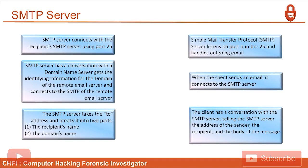The SMTP server connects with the recipient SMTP server using port number 25. The SMTP server listens on port number 25 and handles outgoing email. When the client sends an email, it connects to the SMTP server. The client has a conversation with the SMTP server, telling it the address of the sender, the recipient, and the body of the message.